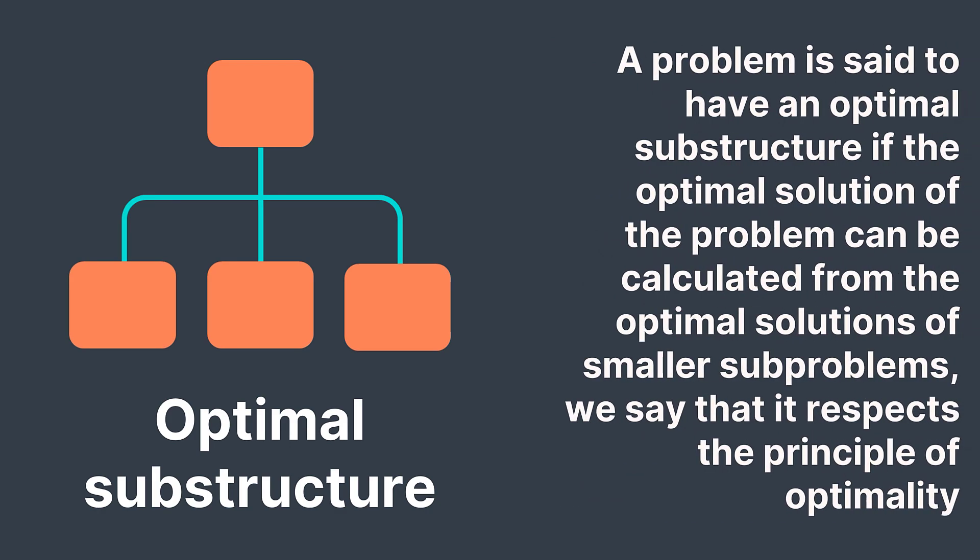A problem is said to have optimal substructure if the optimal solution of the problem can be calculated from the optimal solutions of its smaller subproblems — we say it respects the principle of optimality. The word optimal comes from the fact that dynamic programming is usually used for optimization problems, where we want to find the best solution among a set of possible solutions. For example, in the shortest path problem, we don't search for any path — we search for the most optimal, the shortest one, to minimize the distance.